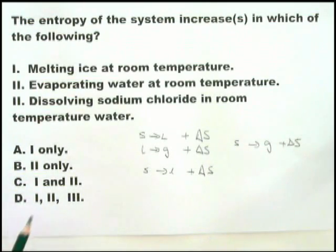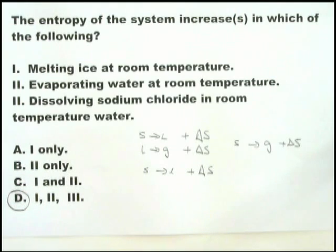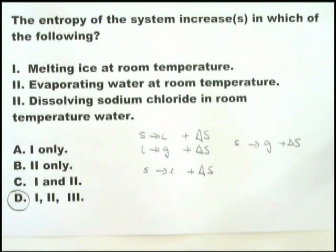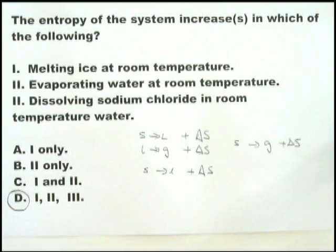Therefore, as soon as you see this one, you can say D. All three of them are positive changes in entropy. All three of them have situations where molecules or ions are moving apart. All three of them have situations where the molecules or ions have greater freedom of movement. Therefore, there is greater disorder in the system, and therefore there is an increase in entropy.